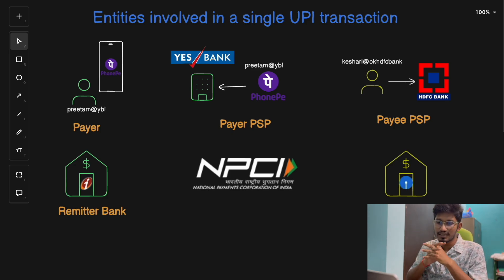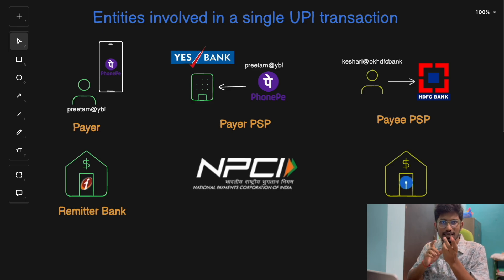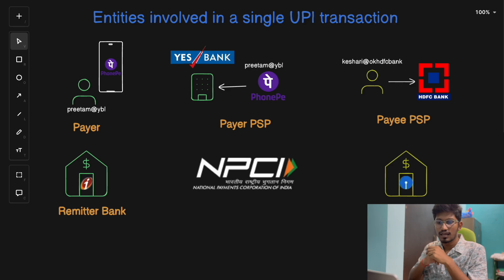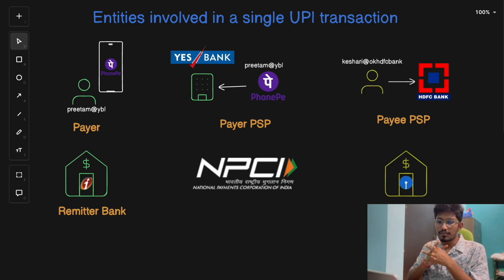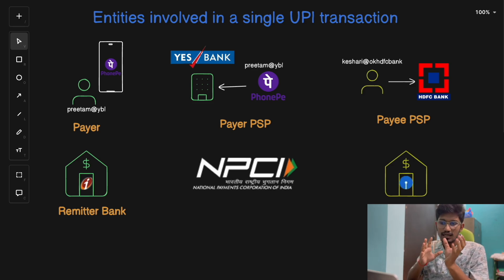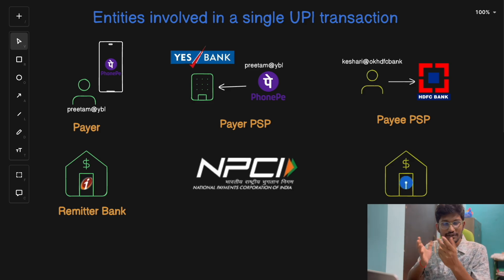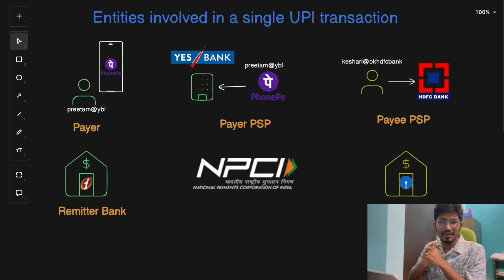UPI is a real-time payment system developed by NPCI — the National Payments Corporation of India, a government corporation. It allows you to link multiple bank accounts to a single mobile application, creating an ecosystem where you can transfer money, pay bills, do recharges, or even shop online instantly using just a mobile number or a Virtual Payment Address, also known as VPA.